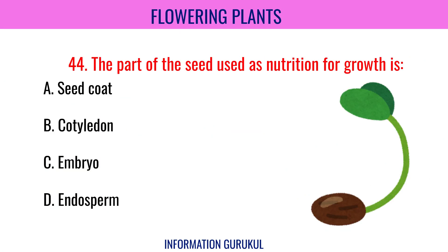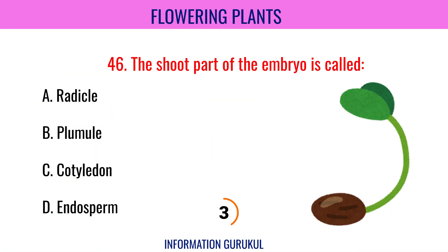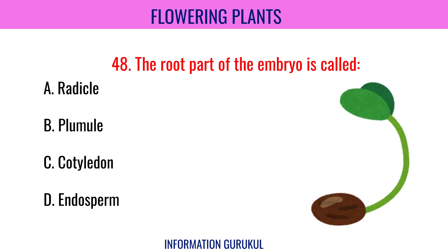The part of the seed used as nutrition for growth is Endosperm. The first part of the seedling to emerge during germination is the Radicle. The shoot part of the embryo is called Plumule. The process by which seeds develop into new plants is Germination. The root part of the embryo is called Radicle.